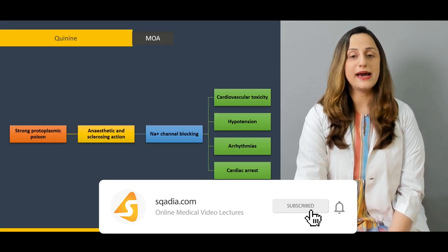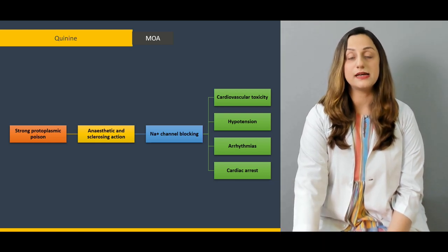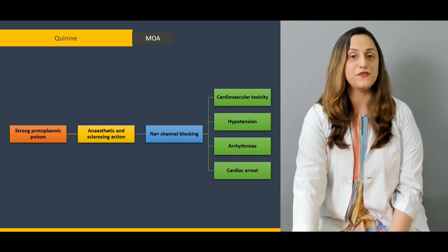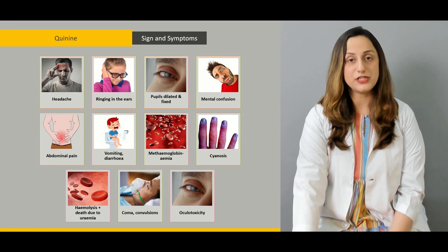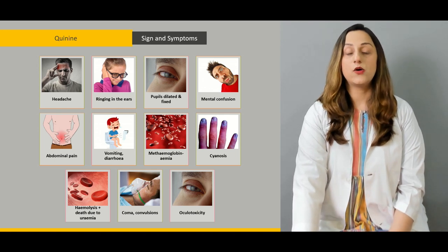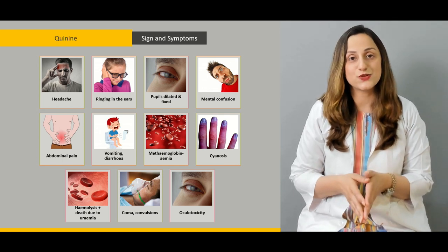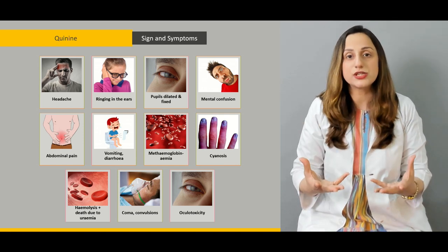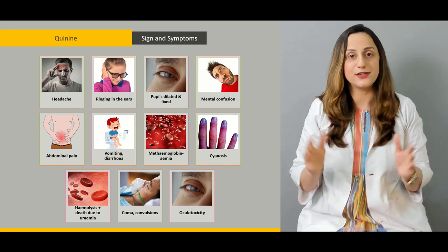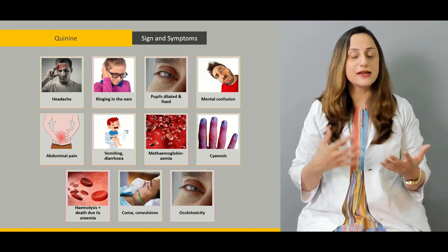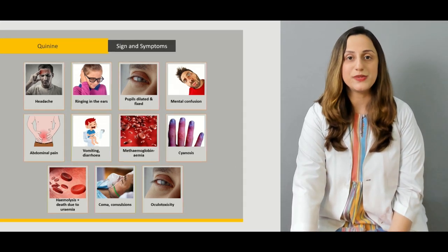Moving on, we discuss conine and its mechanism of action — how it proves fatal, and what the clinical features are, including the features of synconism, a pathological condition resulting from conine poisoning. It is a chronic kind of condition including headache, tinnitus, and pupil changes.